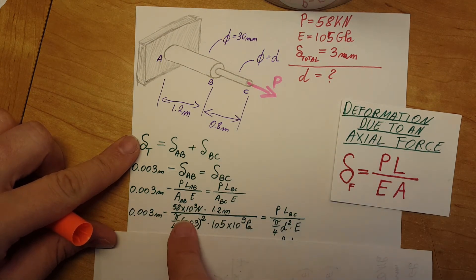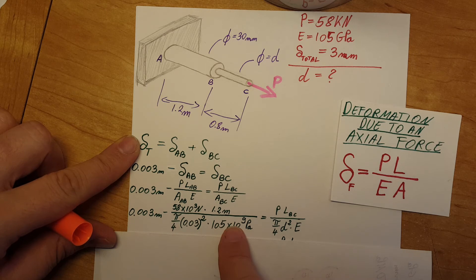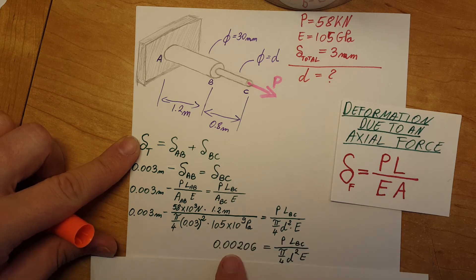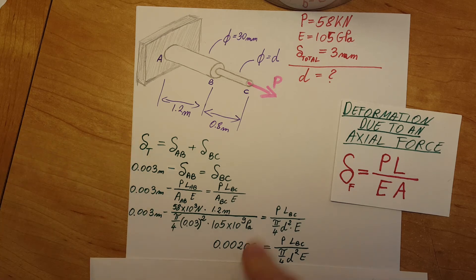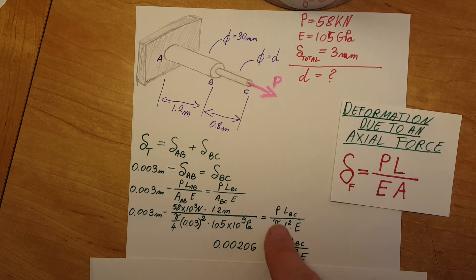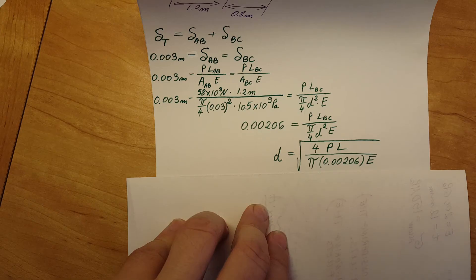Over here I plugged in all the values that we know for section AB and with the calculator you will be able to find the number which is 0.00206. On the right hand side, all I did is change the area into pi over 4 d squared, and from here as we go down we